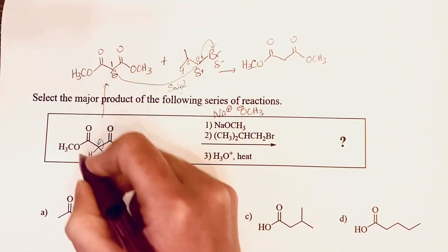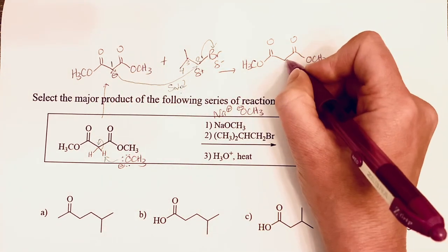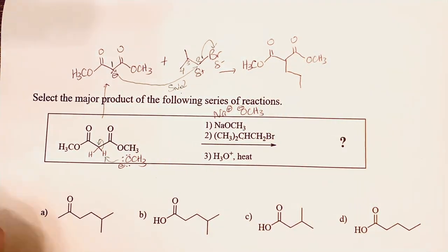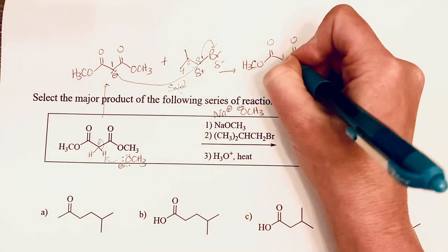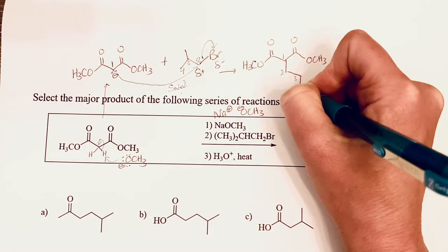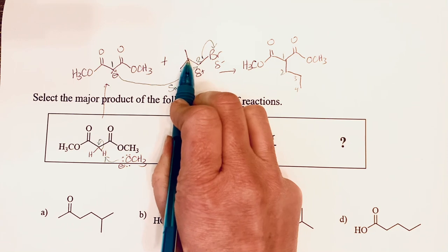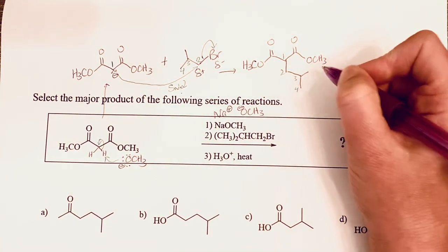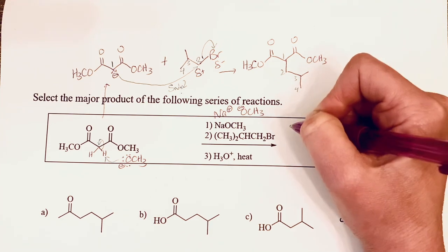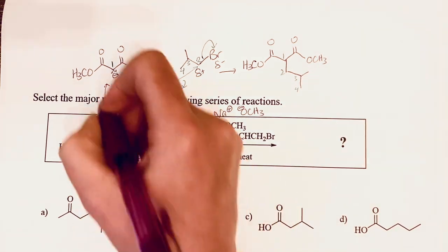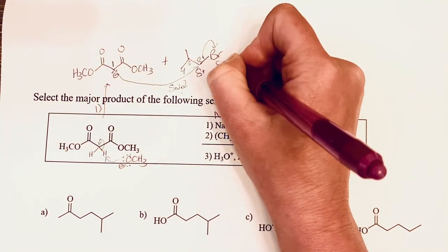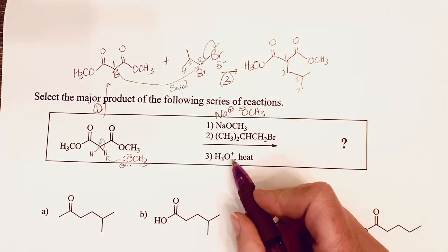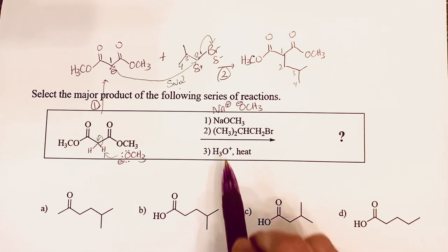Let's go ahead and draw this. I started by drawing that enolate structure. This was carbon one, so there's carbon one, two, three, four. Off of carbon three we do have that methyl group, we don't want to forget that. This is the product of step one, this is the product of step two.